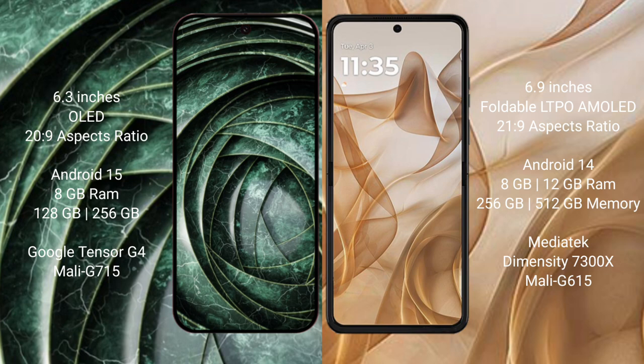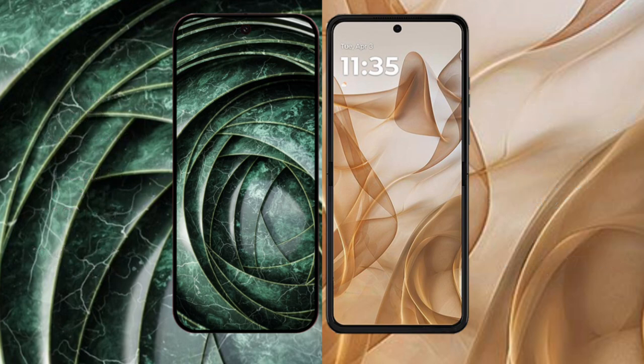The Google Pixel 9a comes with 8GB RAM and 128GB or 256GB internal storage, powered by the Google Tensor G4 processor with Mali GPU. The Motorola Razr 50 comes with 8GB or 12GB RAM and 256GB or 512GB internal storage, powered by the MediaTek Dimensity 7300X processor with Mali-G615 GPU.